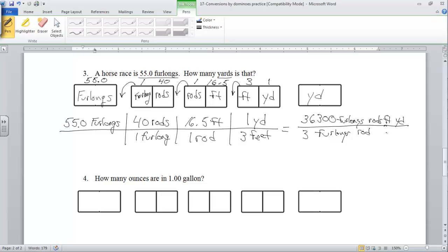On the bottom we have three furlongs, rod, rod, and feet. Looking at this our furlongs can cancel out, rods can cancel out, feet can cancel out, and what we're left with for our unit would be yards. So if you do your math, you come out to 12,100 yards for your answer.